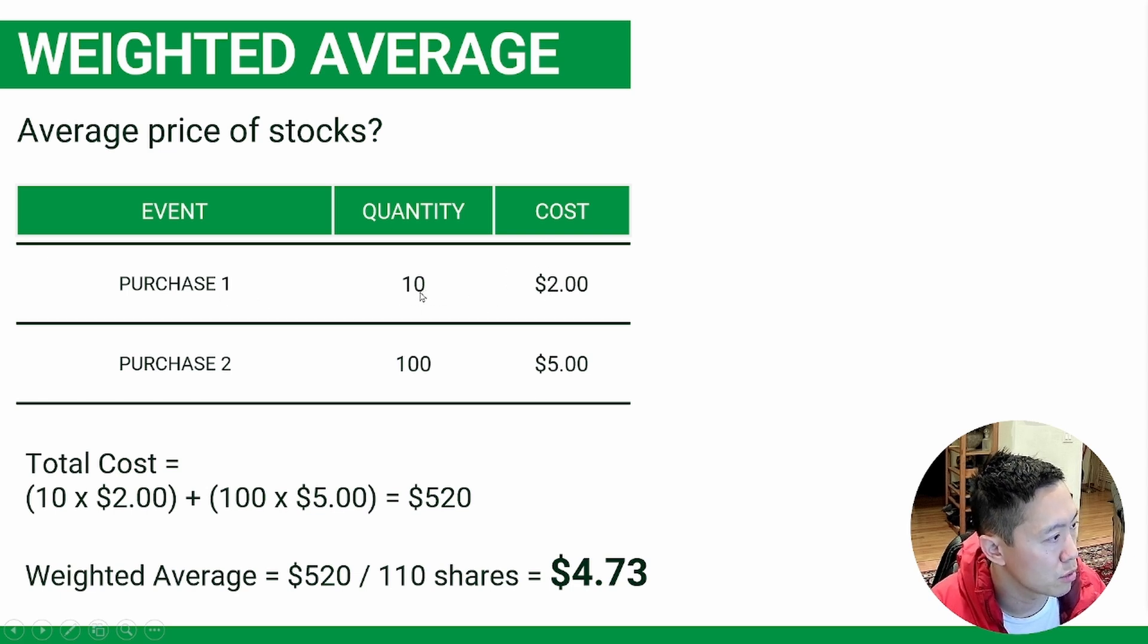So, first, you take the first one, you multiply the 10 shares of stock that you bought by the cost, $2. Then you do the second one, 100 shares for $5, add it up for a total of $520, and then you divide it by the total number of shares for a weighted average of $4.73.